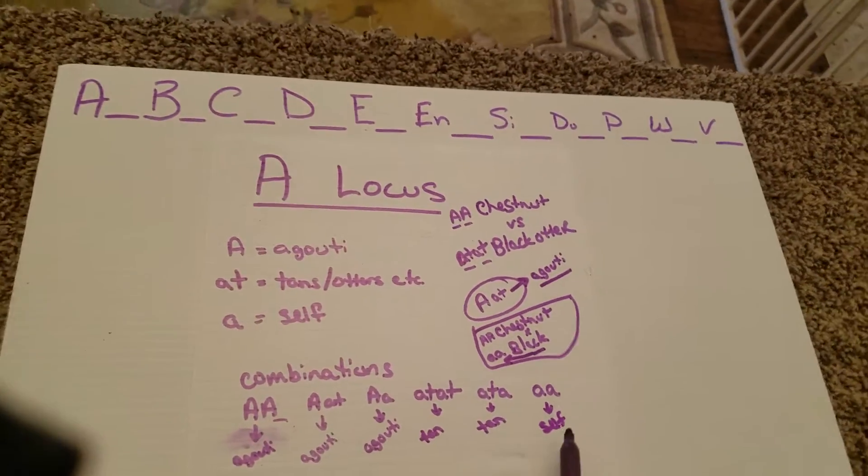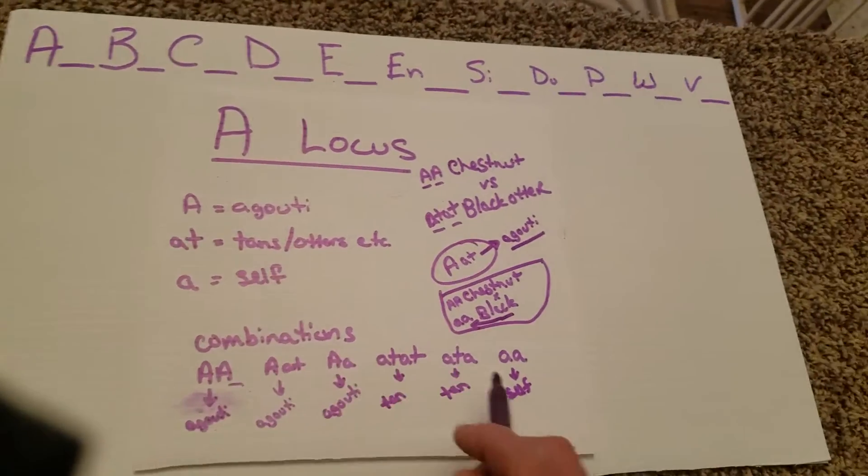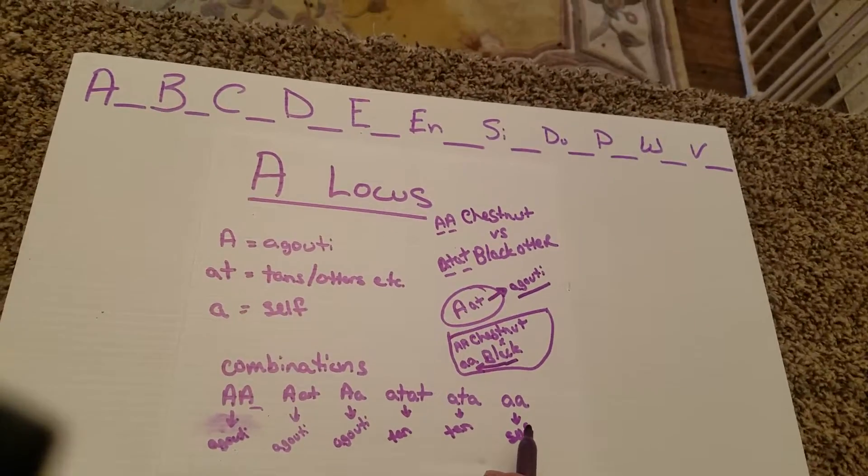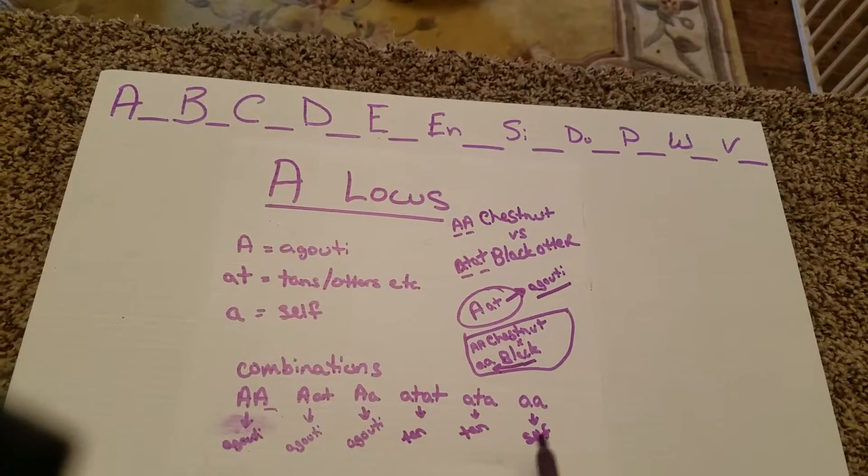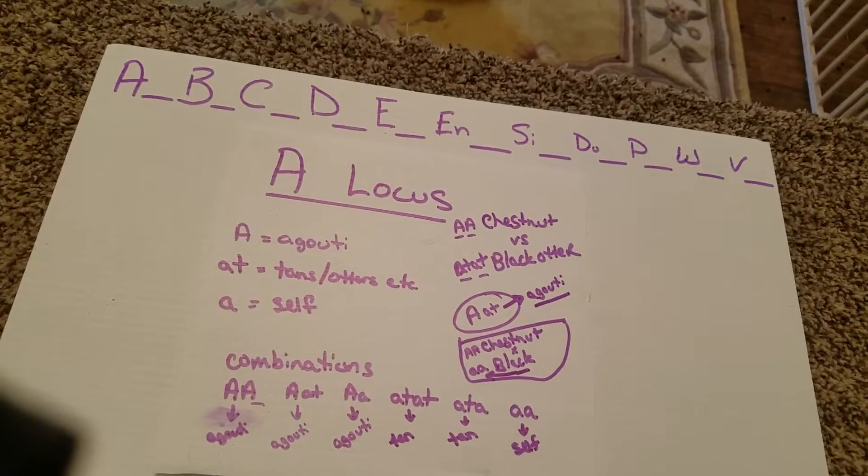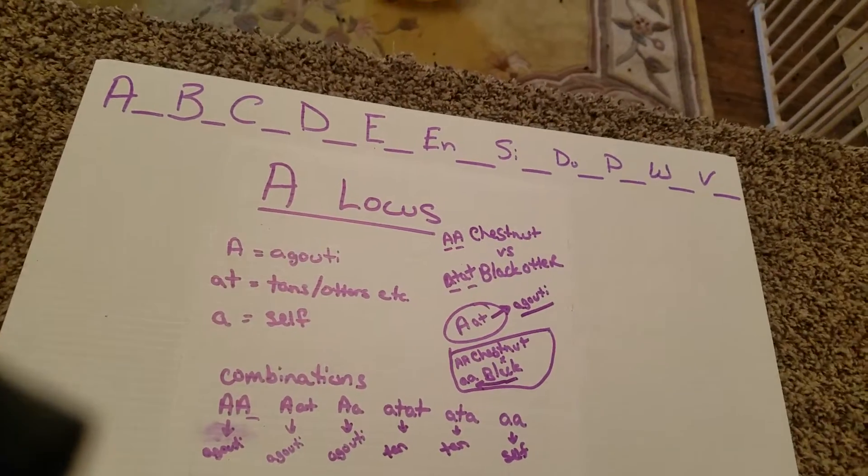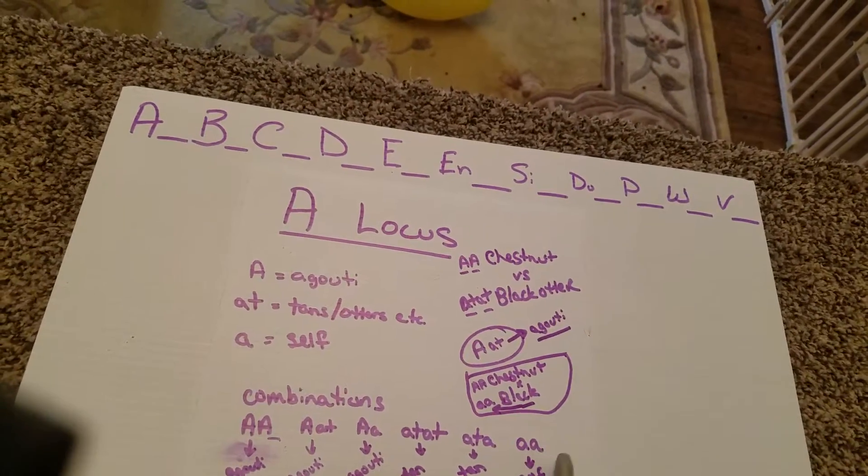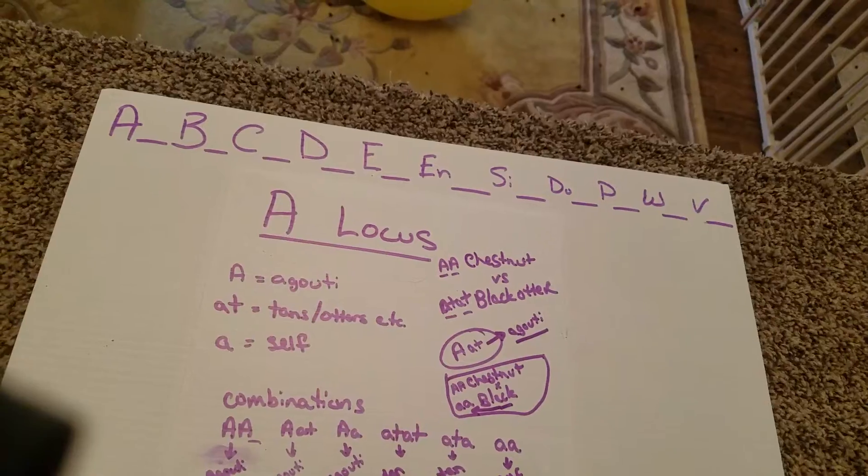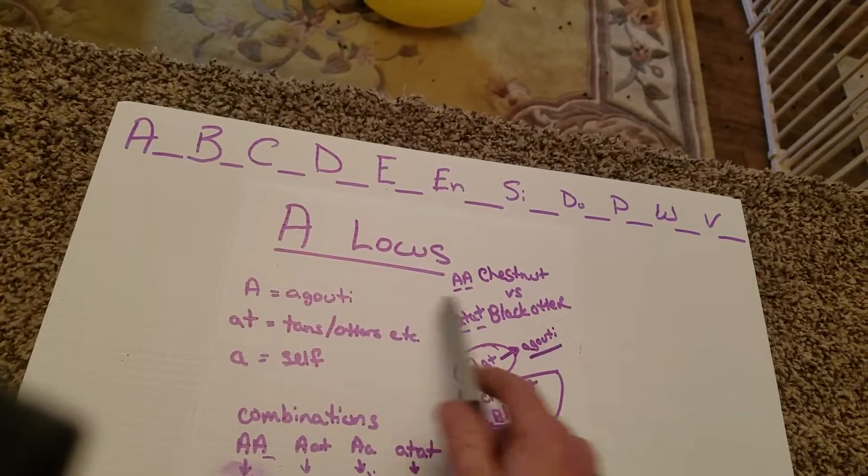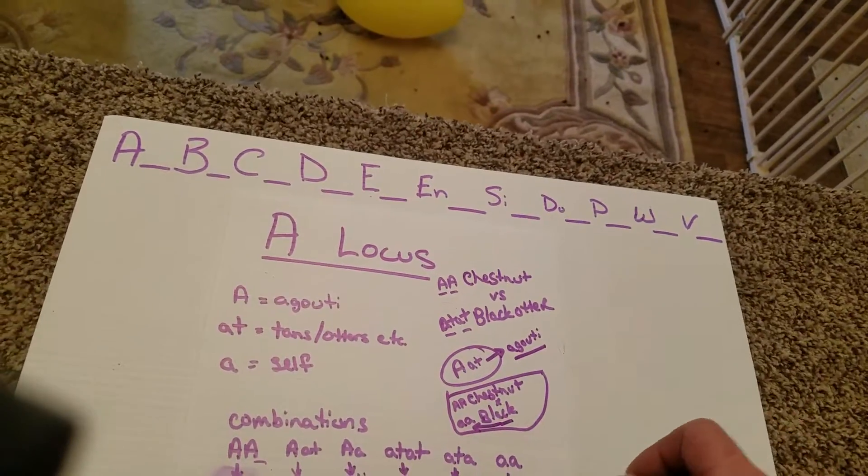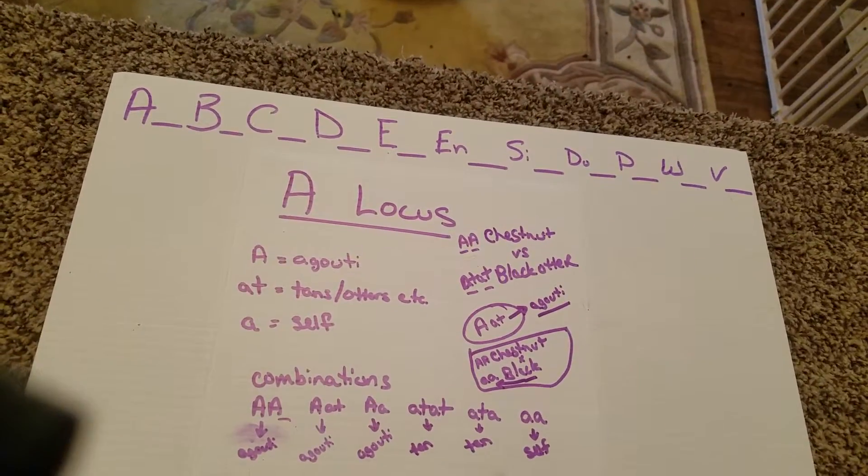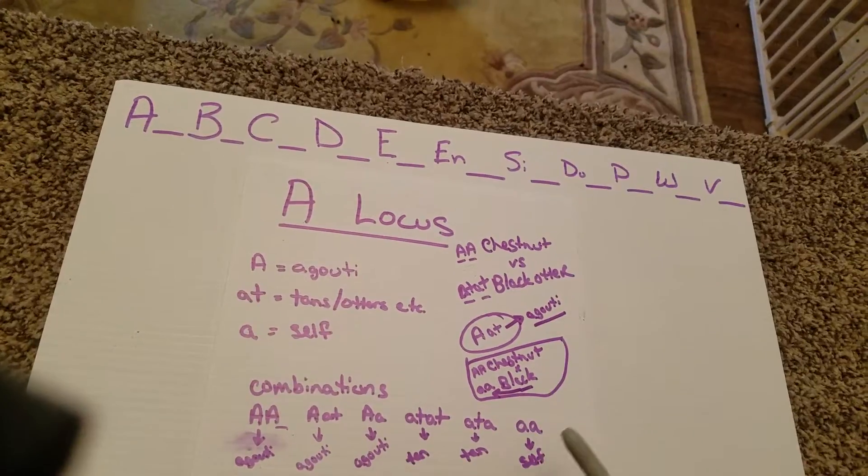So blue rabbits, black rabbits, chocolates, or lilacs rather, those are all going to be very recessive traits that a rabbit can possess. And then if we breed our self rabbits like our blues, blacks, chocolates, and lilacs to agoutis, we know that the odds of getting a self are fairly small. Now it is possible however, and I'll go ahead and do an example here.